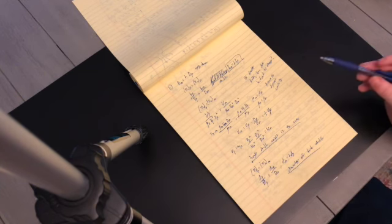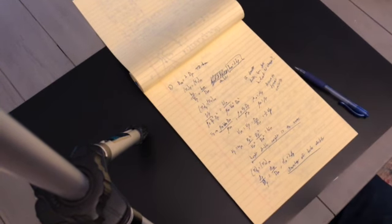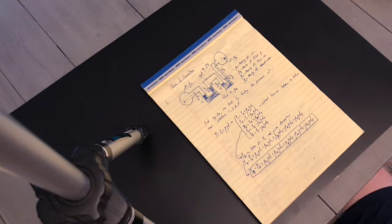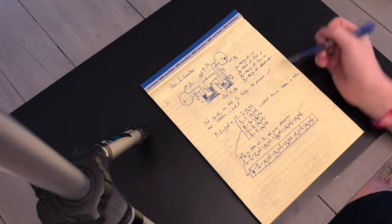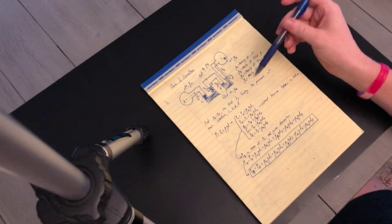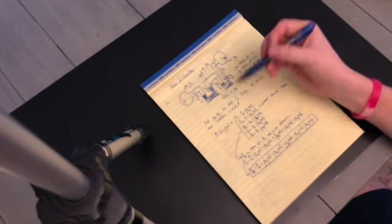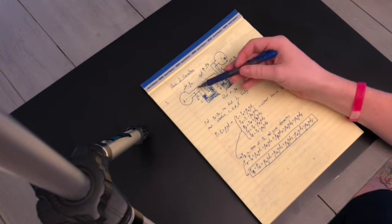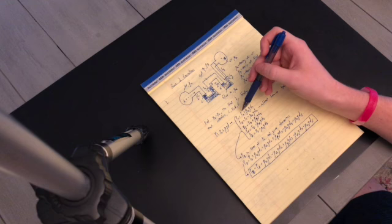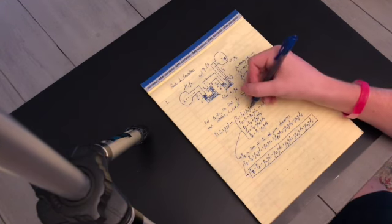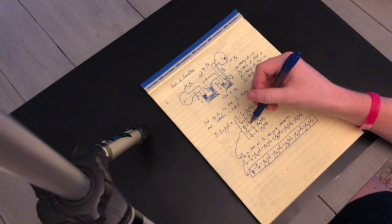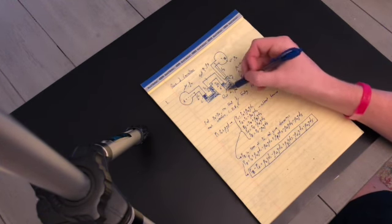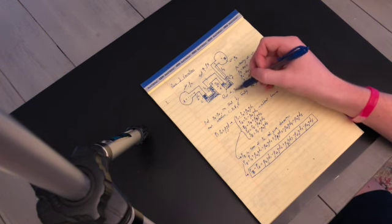Quiz two is on hydrostatics and pressure. First we find the pressure difference between point A and point B, given fluid properties including the density of water. To find pressure at B from A, we work through each interface using p = p₀ + ρgd, where d is the vertical distance. We start with p_C = p_A + ρ_water · g · d₁, then step through p_D, p_E, and so on.